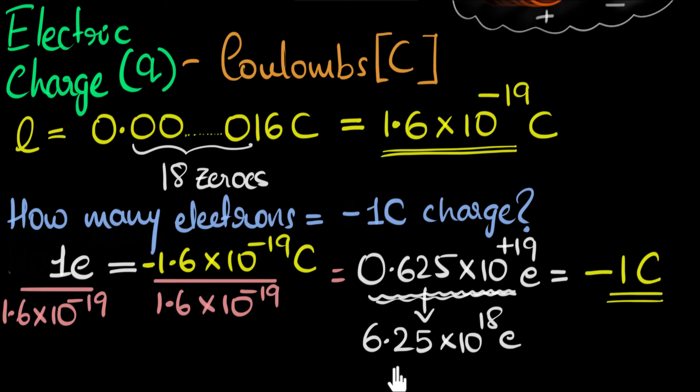So anyways, these many electrons, such a huge number, 10 to the 18 electrons. These many electrons together make up a charge of negative one coulomb.